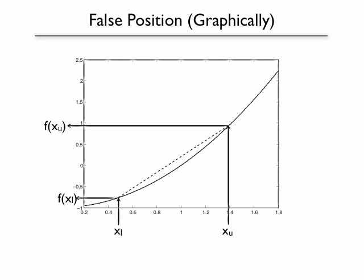We see where on that line, what value of x would give zero. So we go over from f of x equals zero, go down, and there we get a new position for x_r.